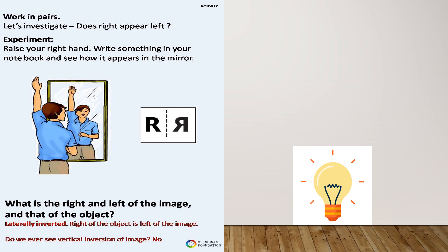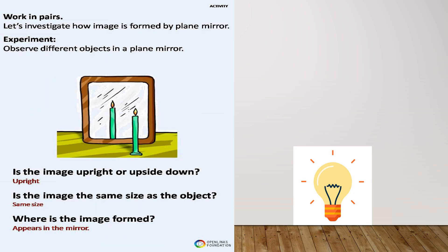Now observe a candle placed before a mirror. In a plane mirror, we get an upright image — not an upside-down image. The image has the same size as the object. The image appears to be formed behind the mirror, and the distance from the object to the mirror is the same as the distance from the image to the mirror.